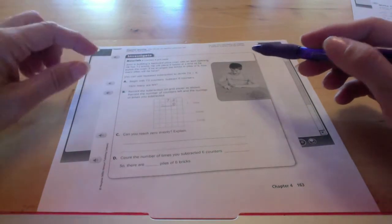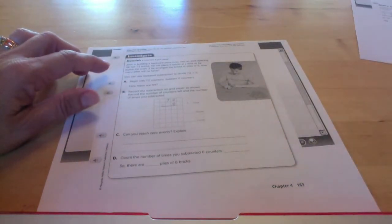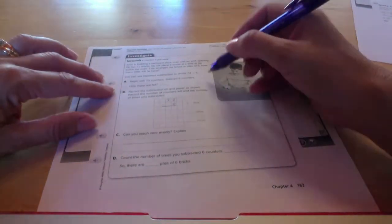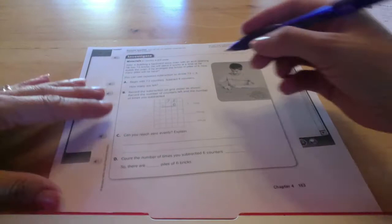If he arranges the bricks in piles of six, how many piles will he have? So our division problem is 72 divided by six, and we're just going to subtract six each time to represent each of the piles.